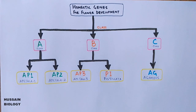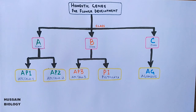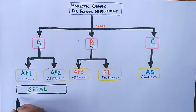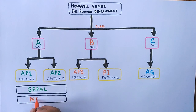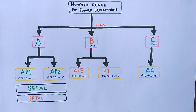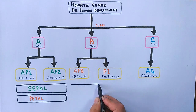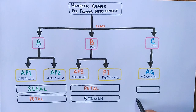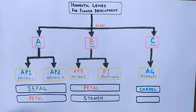It is by these five genes — AP1, AP2, AP3, PISTILLATA, and AGAMOUS — that interact together and transform the shoot apical meristem into floral meristem. The A class genes (AP1 and AP2) promote the development of sepal, and also promote the development of petal. The B class genes (AP3 and PISTILLATA) promote the development of petal and stamen. The C class gene AGAMOUS promotes the development of carpel and stamen.